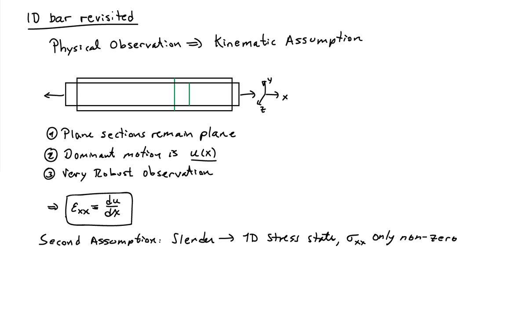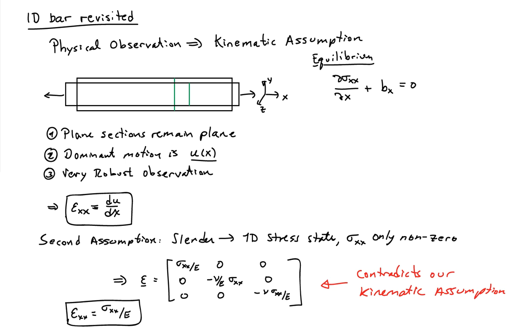The second assumption is that bars are typically slender, so we assume a 1D stress state where sigma_xx is the only non-zero stress. This takes us from nine stress variables to one. If I calculate the corresponding strain in 3D associated with this 1D state of stress, I have strains in the y and z direction, which contradicts our kinematic assumption. But we're making assumptions, and sometimes you end up with contradictory facts. We'll consider only one constitutive equation: epsilon_xx equals sigma_xx over E, and ignore these two transverse components.